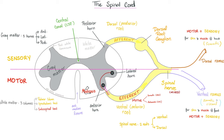The spinal nerve will divide into a dorsal ramus and a ventral ramus, each of which has sensory and motor. The ventral is more important. The dorsal ramus just supplies motor and sensory fibers for the skin and muscles of the back — that's it. Anything else is ventral ramus. The lumbosacral plexus comes from the ventral ramus.